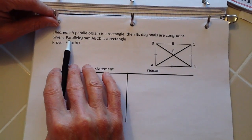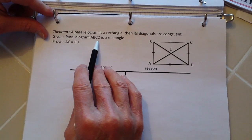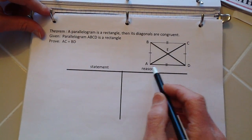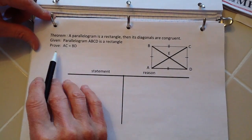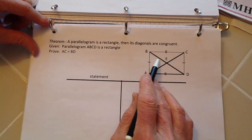So therefore, this is what we have given: parallelogram ABCD is a rectangle, and I have sketched one here. What we're trying to prove is that the diagonals AC and BD are congruent.